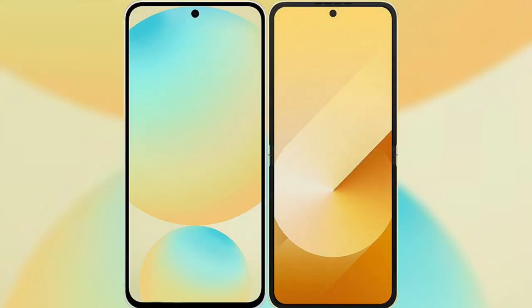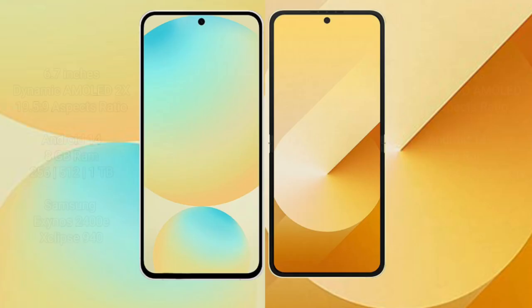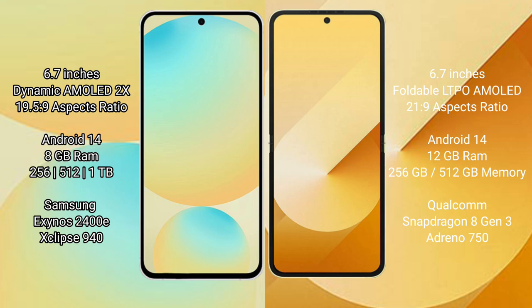I will compare the new Samsung Galaxy S24 FE with Samsung Galaxy Z Flip 6. The Samsung Galaxy S24 FE features a 6.7-inch dynamic AMOLED display with an aspect ratio of 19.5:9. The Samsung Galaxy Z Flip 6 features a 6.7-inch foldable dynamic AMOLED display with an aspect ratio of 21:9.